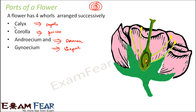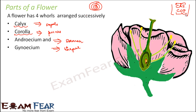Many students get confused with the names Calyx and Corolla because both start with C. You can remember a small memory tip: 'CaS' — Calyx represents Sepals. And similarly, 'Cor' — Corolla represents Petals. So CaS and Cor help you remember what is Calyx and what is Corolla.